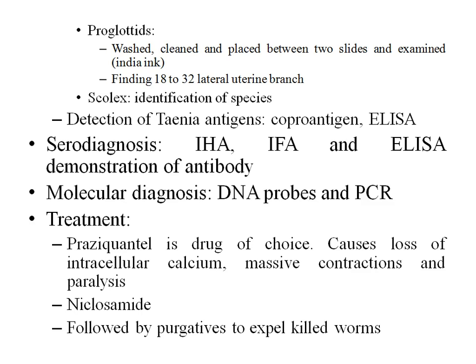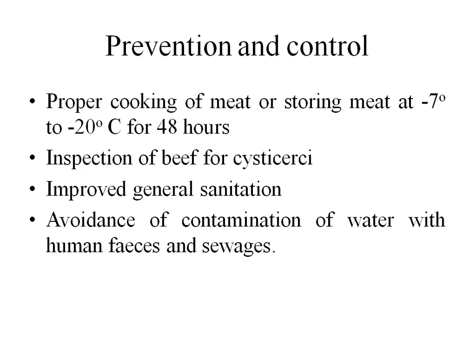Treatment: praziquantel is the drug of choice, causing loss of intracellular calcium and massive contraction and paralysis of the parasite. Niclosamide can also be used. Purgatives should be given after anti-parasitic drugs to expel killed forms. Prevention includes proper cooking of beef or storing at minus 7 to minus 20 degrees Celsius for 48 hours, inspection of beef for cysticercus, improved general sanitation, and avoidance of contamination of water with human feces and sewage.